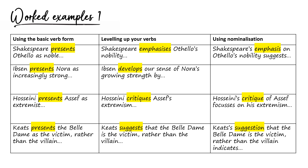Next row: 'Ibsen presents Nora as increasingly strong.' Again quite assertive. I need to consider whether I'm 100% sure about this. Does he present Nora as increasingly strong through A Doll's House? I'm happy with that, so I'll stay with 'presents.' However, one thing I'm discussing in my essay is her character development as she moves towards leaving the house at the end of the play, so I'll use 'develops' — 'Ibsen develops our sense of Nora's growing strength by...' Using nominalisation here would be awkward, so I'll leave that.